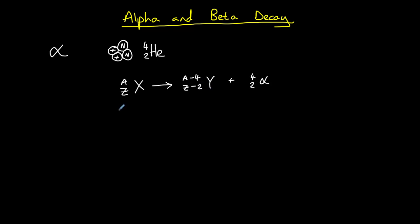For example, uranium-238 decays by alpha decay to produce thorium-234.